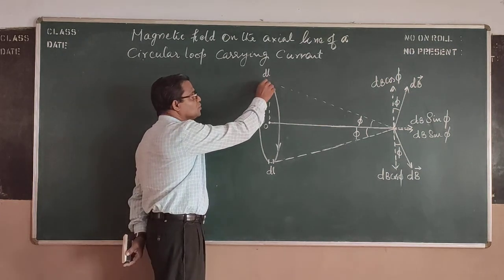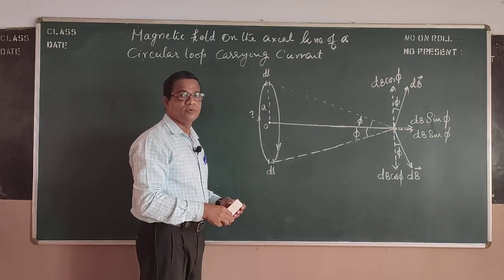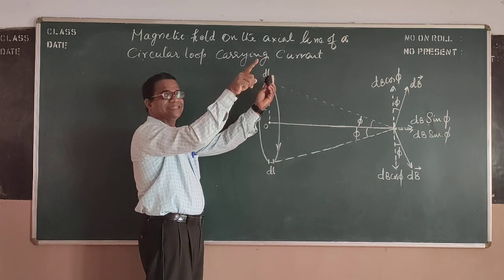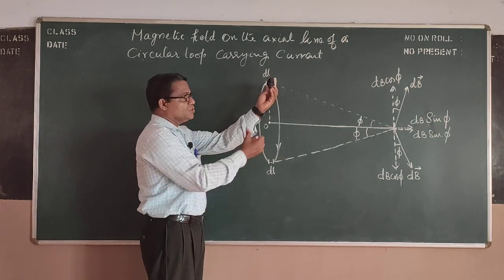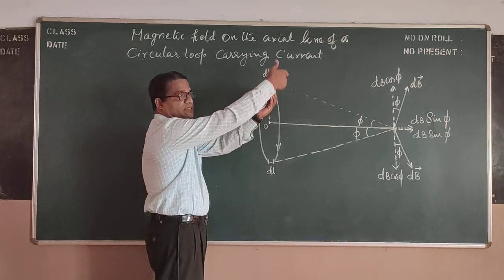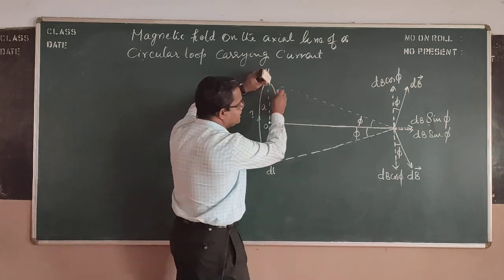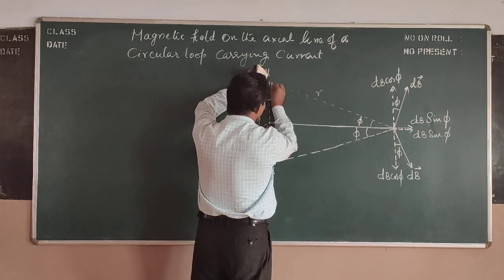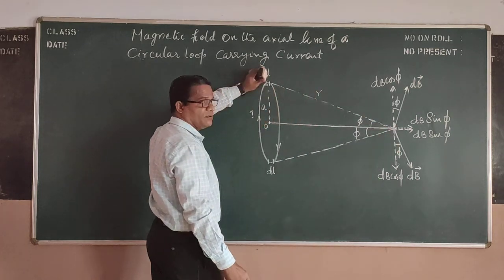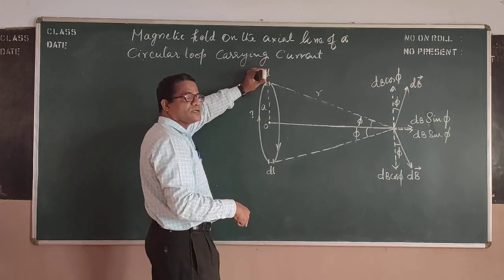So when the current is going clockwise direction and I consider a length element DL for applying Biot-Savart Law, that length element will be coming like this and the current flows like this. So I apply the thumb rule and the field lines are going around that DL. And from that DL at the distance R, let me take this distance to be R, distance to the point from the length element. Then the field is going like this in a cyclic or circular manner.